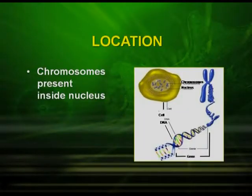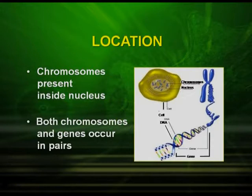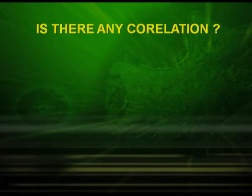Could you recall where the chromosomes are located? Yes, you have studied the plant and the animal cell. The chromosomes are present inside the nucleus. A very important thing that came to light was that both the chromosomes and the genes occur in pairs. So, is there any correlation between the chromosomes and genes?